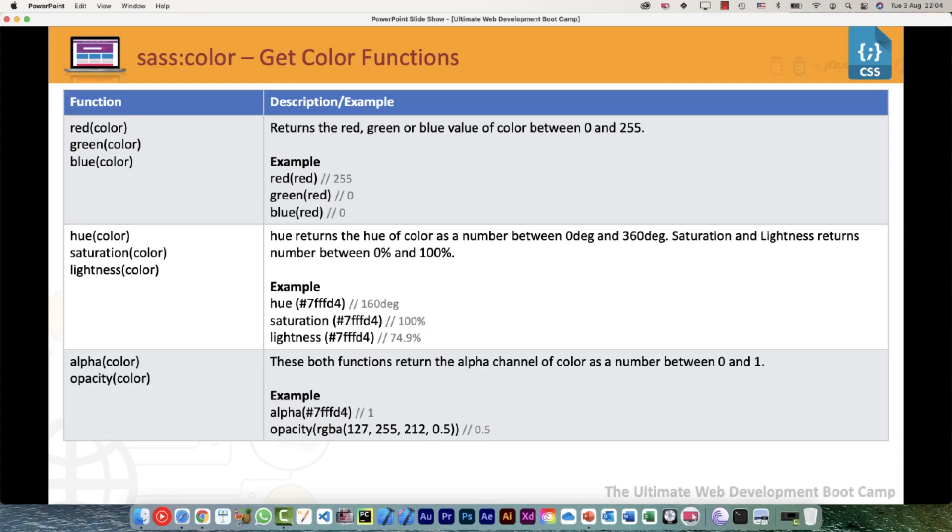Then we have if we want to check alpha or opacity, both do the same thing, so that would give us a value between 0 and 1. This is like the get color functions. Before we saw the set color functions, so in get color functions we can check what is the value of alpha or opacity if we need to.